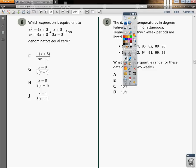The question says, which expression is equivalent to x squared minus 9x plus 8 over x squared plus 9x plus 8 times x plus 8 over x minus 8 if no denominators equal 0?